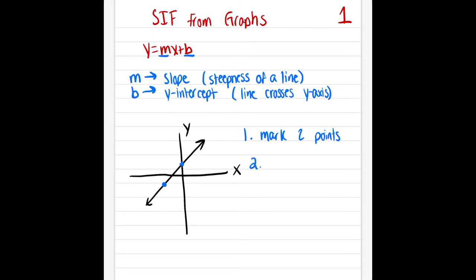Step two is going to be to find our M equals rise over run. So that's when we're going to start at our farthest left point, find how many up or down and how many over to the right we have to go, draw our little slope triangle, calculate our fraction, and make sure it's fully reduced.